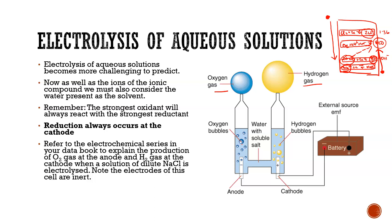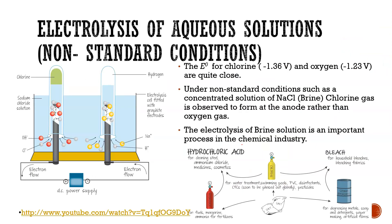We will never produce sodium metal from the electrolysis of aqueous sodium chloride, and under standard conditions we won't produce chlorine either. However, if we change conditions — for example by running the cell with a high concentration of sodium chloride — we actually start to smell chlorine gas being produced. If we increase the concentration to brine, a saturated chloride solution, we observe chlorine gas rather than oxygen gas.